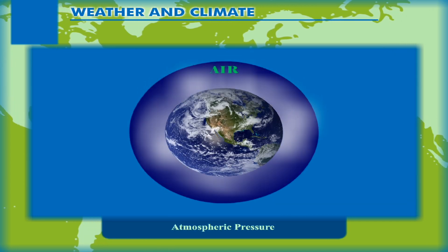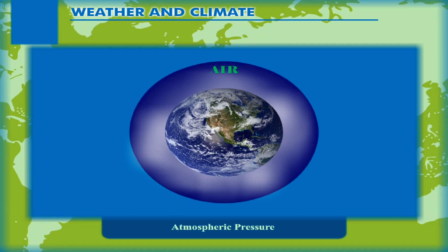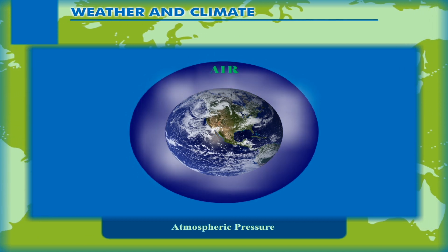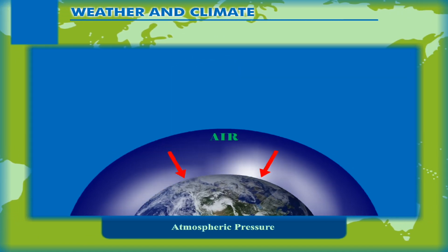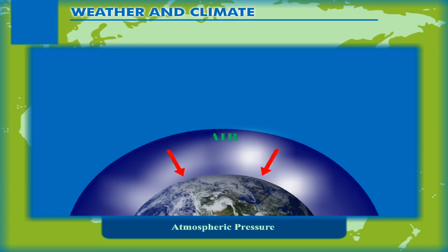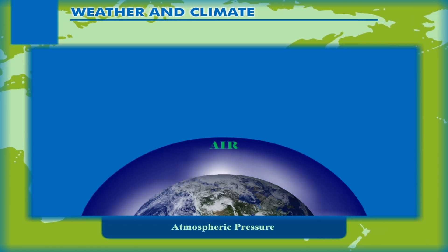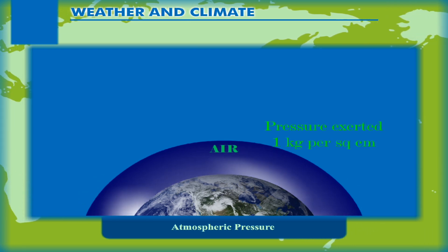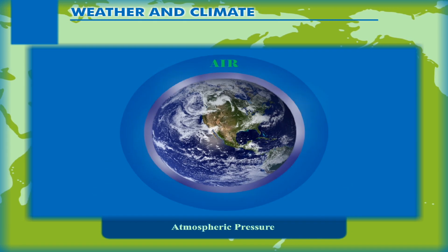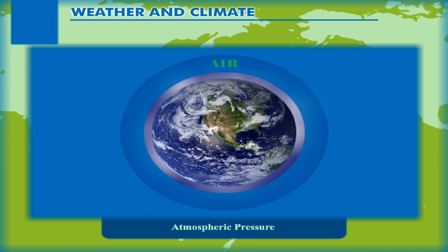Atmospheric Pressure. Like all other things, the blanket of air lying above the surface — or the atmosphere — also has weight. It exerts this weight on the earth's surface. This is known as the atmospheric pressure. The pressure exerted by the atmosphere is about 1 kg per square centimeter. The lower layers of the atmosphere have higher density than the upper layers.